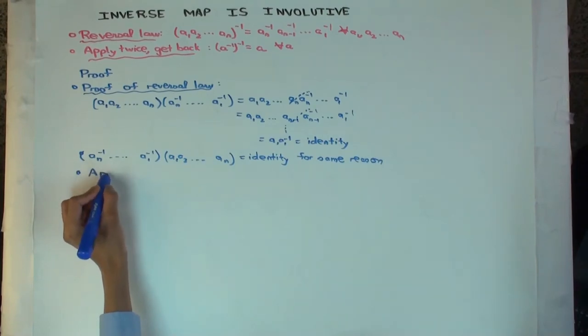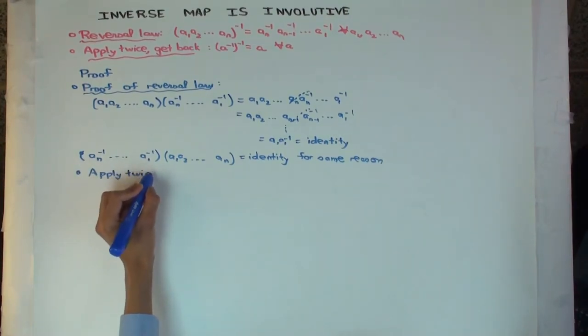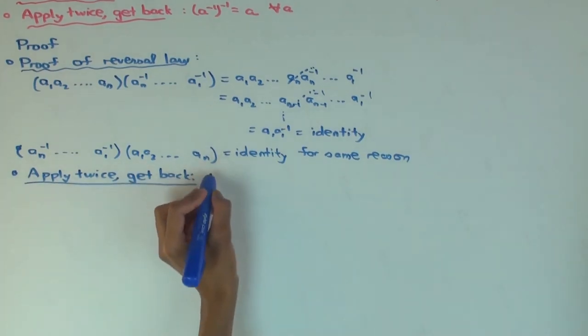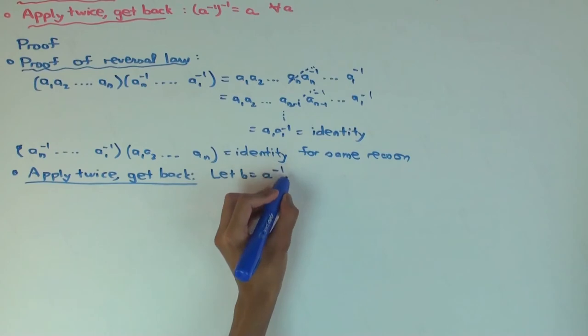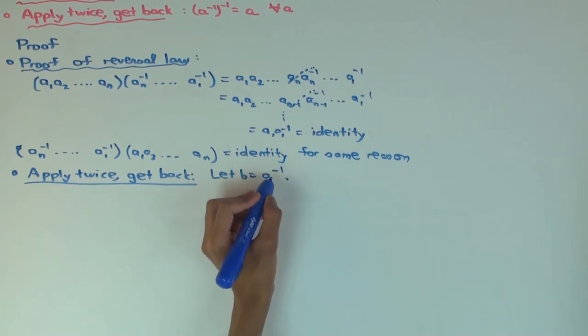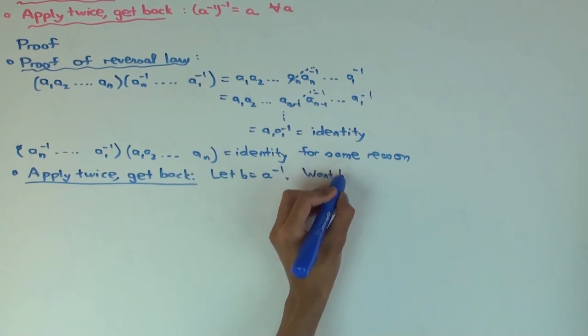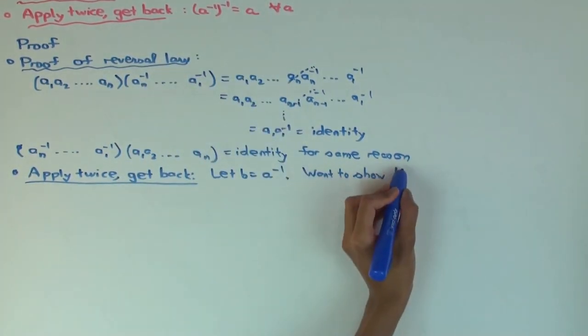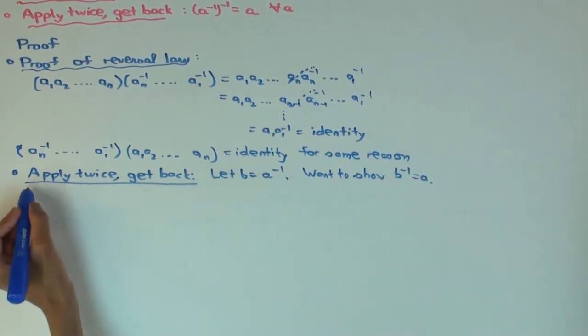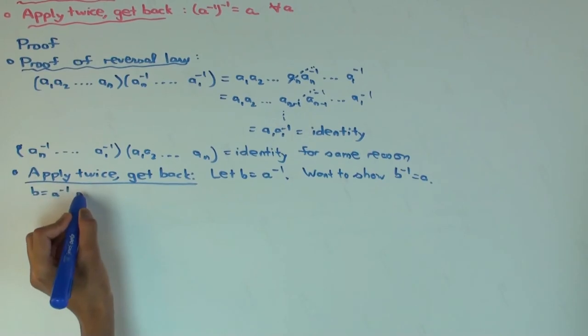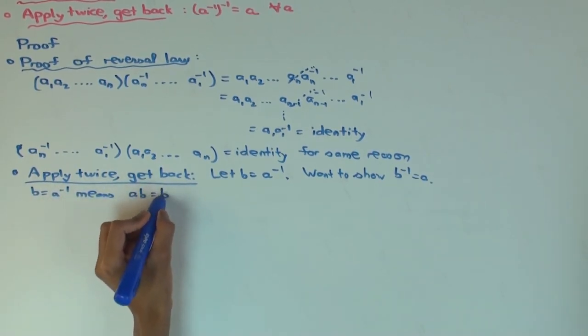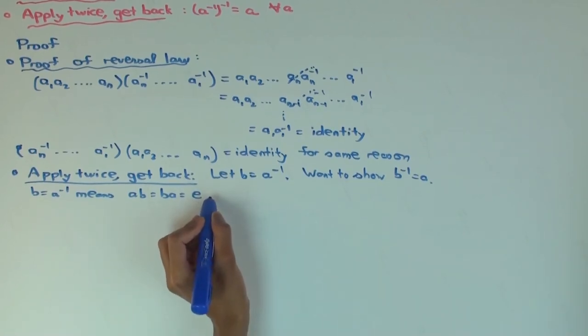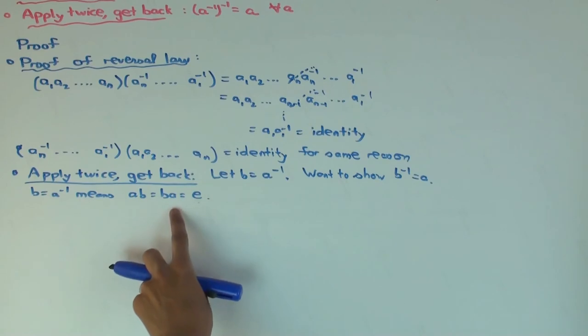And apply twice and get back. So, let's do this a little more explicitly. So, let's say b equals a inverse. What do you want to show? So, you want to show this. a inverse inverse is this. So, we want to show that b inverse is a. Well, what does this mean? So, b equals a inverse means that what? a, b equals b, a equals the identity. Just call it e for identity.